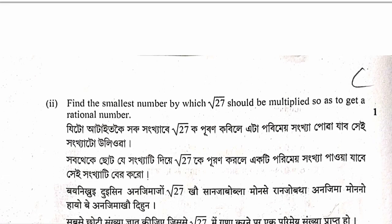Short answer question 2: Find the smallest number by which root 27 should be multiplied so as to get a rational number. Root 27 equals root 3 into root 9 equals 3 root 3. Therefore multiply by root 3 to get a rational number.